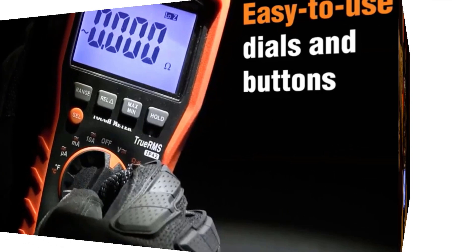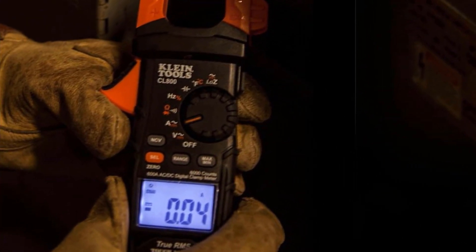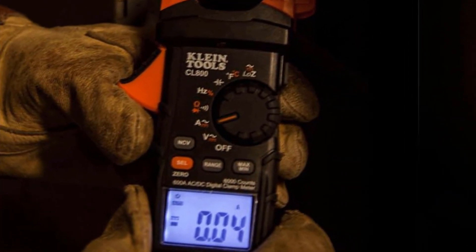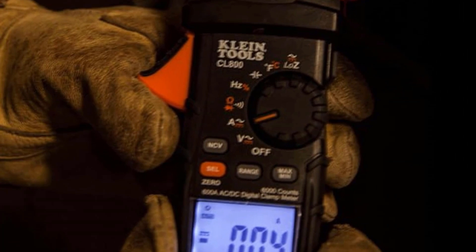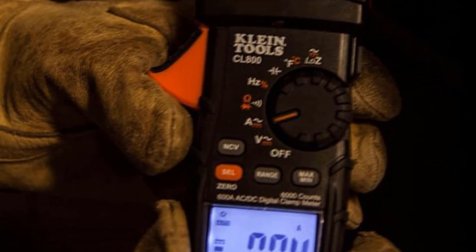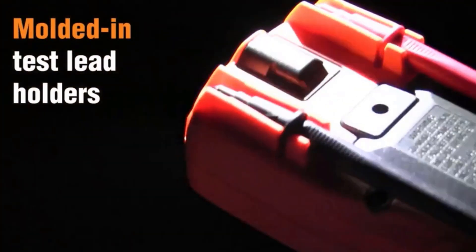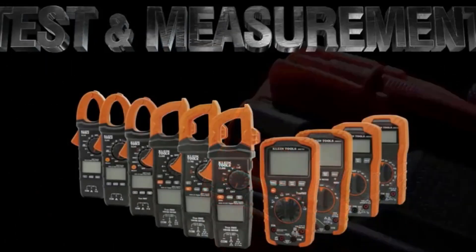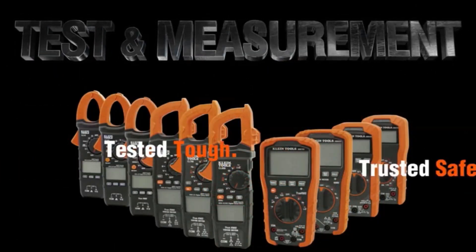Additional features include a backlit display, non-contact voltage detection, and a rugged design that withstands job site conditions. The Klein Tools CL800 Clamp Meter combines functionality, reliability, and durability, making it an invaluable addition to any tool kit.